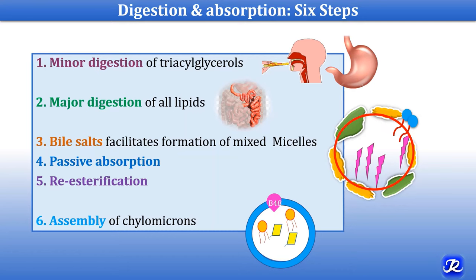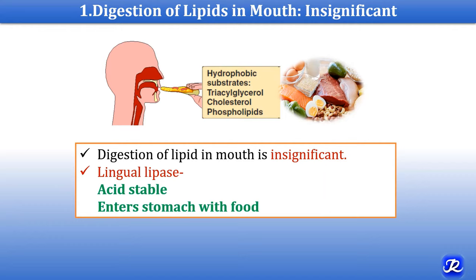Dietary lipids contain triacylglycerol, cholesterol, and phospholipids, and 80 to 90 percent of dietary lipids are triacylglycerol. The enzyme lingual lipase is acid-stable in nature and is synthesized by the glands present at the back of the tongue. This enzyme enters the stomach along with food, and digestion of lipid in the mouth is insignificant.